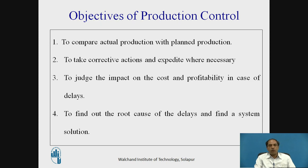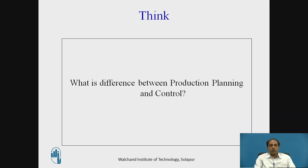The objective of production control is to give the comparison between plan versus actual and, if necessary, take corrective action. Corrective action will expedite wherever necessary, as some resources may be moving at a slower speed. Other objectives include judging the impact on cost and profitability in case of delays, and finding the root cause of delays to find a system solution.